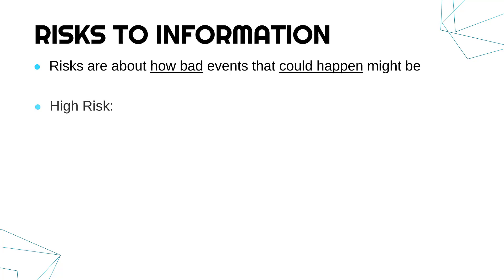Something which is high risk usually has two components within it. Usually it has a high likelihood, which means it's quite possibly going to happen — there may be an attempt to give a percentage to it sometimes. And also there might be high impact, so when it does happen, it could be really bad. For something to be high risk, usually both of these have got to be true. But equally, it could be so bad that despite being really rare, it's still considered high risk.